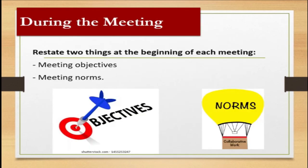Now that you've done all the planning, set your agenda, defined the norms, sent them to all participants, and set the stage properly — starts now the second phase, and that is during the meeting. The first thing to do is to restate two very important things: the meeting objectives and the meeting norms. You have to remind your participants why we are here, whether it's to reach a consensus or to discuss a certain topic, and also remind them of the meeting norms to restate the ground rules quickly.